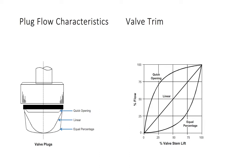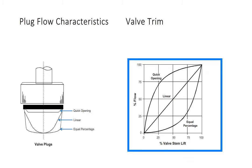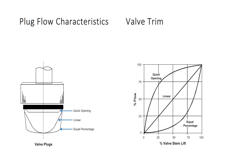The plug at the bottom of our sketch, the thick one, is called an equal percentage plug. Now let's look at the graph on the right. First, look at the quick opening plug. Notice we have stem lift or valve stroke on the bottom of the graph and the percentage of water flow on the left of the graph.